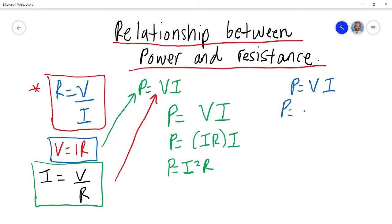So that's going to be P is equal to V, and then you're going to put V over R. And that now becomes P is equal to V squared over R.